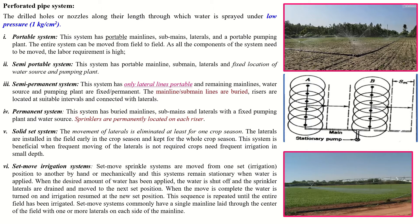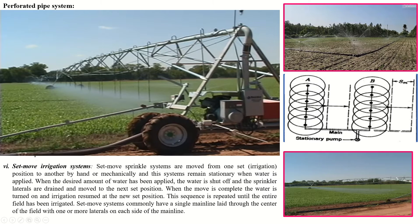In the permanent system, the entire system — main, sub-main, and laterals — is fixed, and sprinklers are permanently located at each riser. In the solid set system, movement of laterals is eliminated for at least one crop season. The laterals are installed early in the crop season and kept for the whole crop period. This system is beneficial when frequent movement of laterals is not required but frequent irrigation is needed.